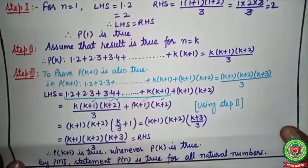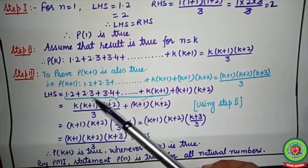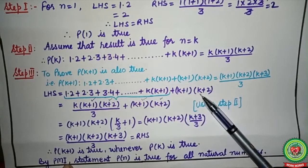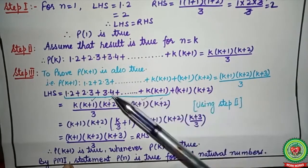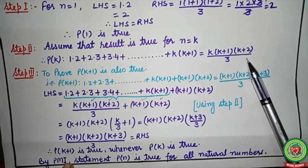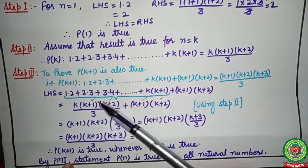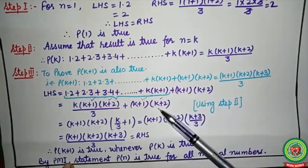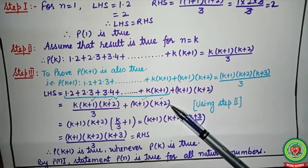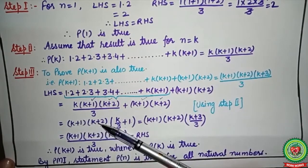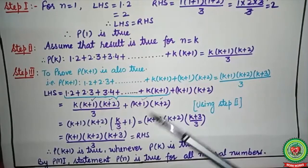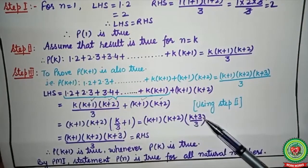We start from the left hand side: 1·2 + 2·3 + ... + k(k+1) + (k+1)(k+2). Using Step 2, the sum of the first k terms equals k(k+1)(k+2)/3, and the last term remains as is. The two factors (k+1) and (k+2) are common, so take them outside the bracket, leaving k/3 + 1 inside.